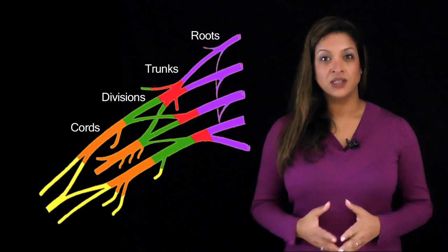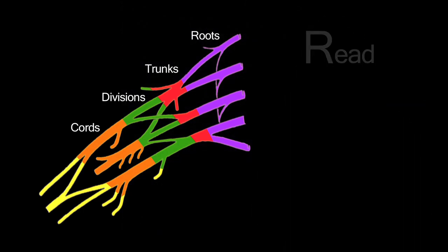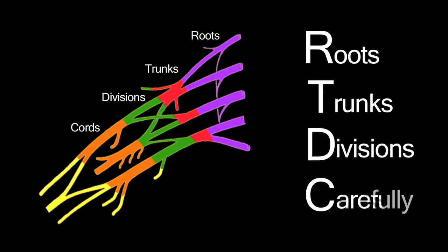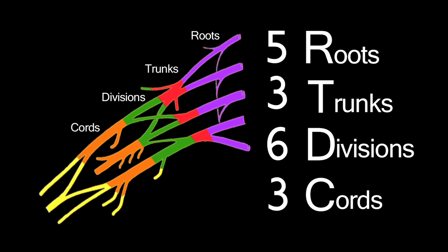This can be confusing, so I have the mnemonic: Read The Details Carefully. R is for roots, T is for trunks, D for divisions, and C is cords. Now how many of each? Think of the numbers 5363 — that's 5 roots, 3 trunks, 6 divisions and 3 chords.